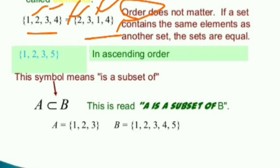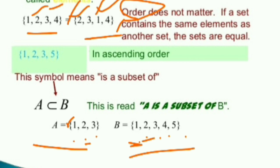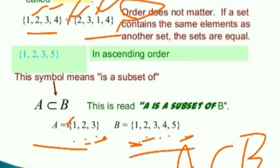Next is a subset. For example, let set A = {1, 2, 3} and set B = {1, 2, 3, 4, 5}. Now, 1 is in A and also present in B; 2 is in A and also in B; 3 is in A and also in B. All elements of A are present in B. Therefore, A is a subset of B — that is what we call a subset.